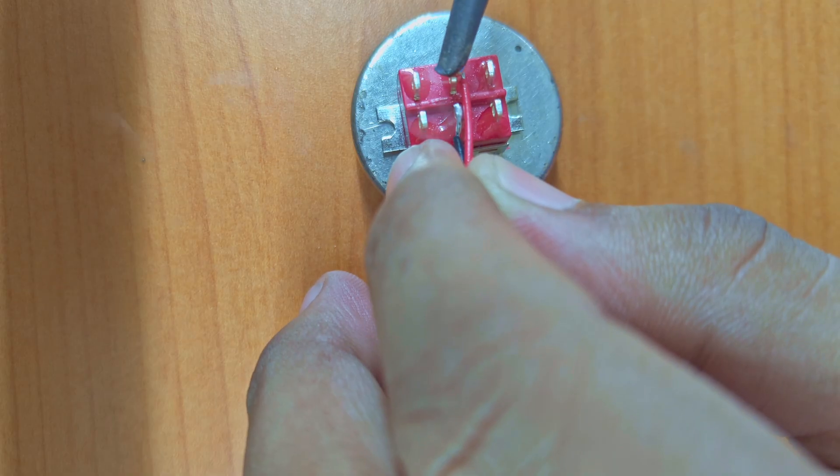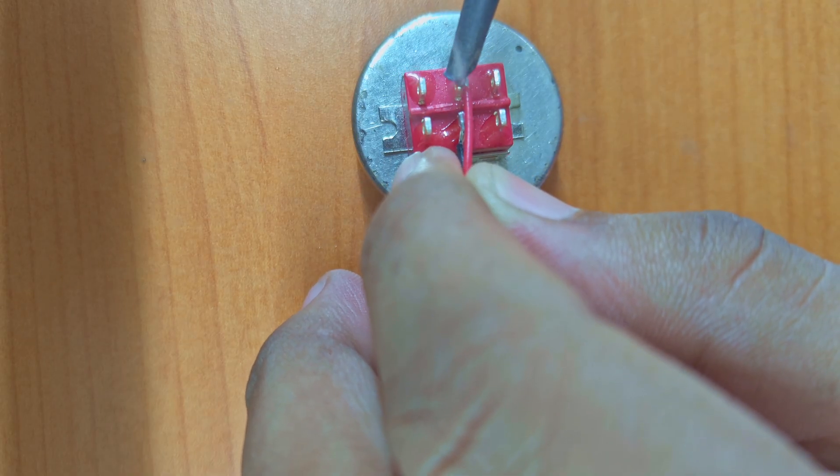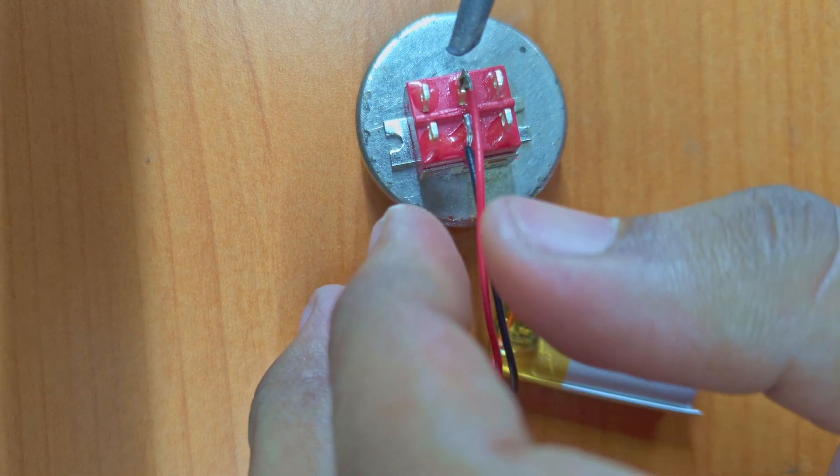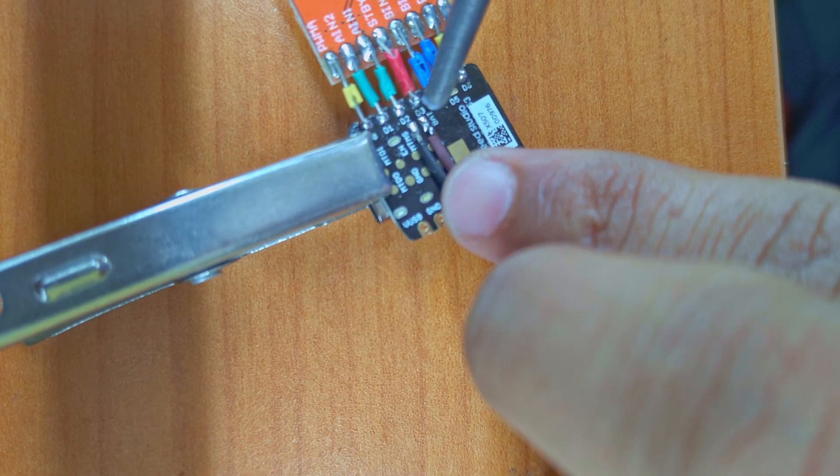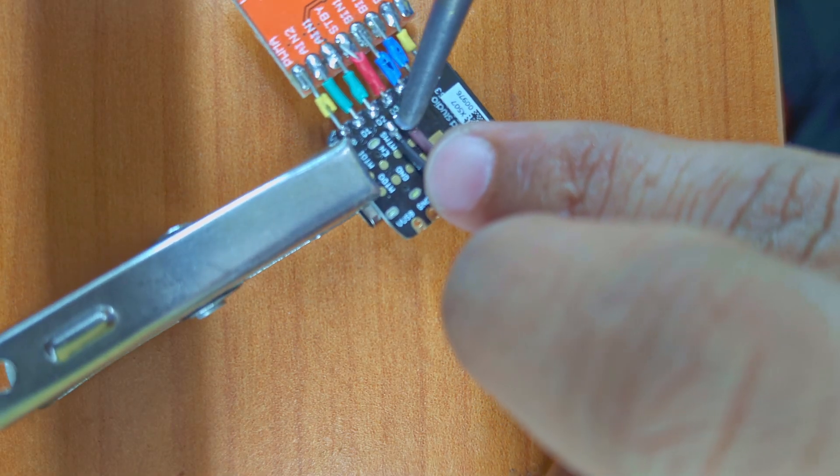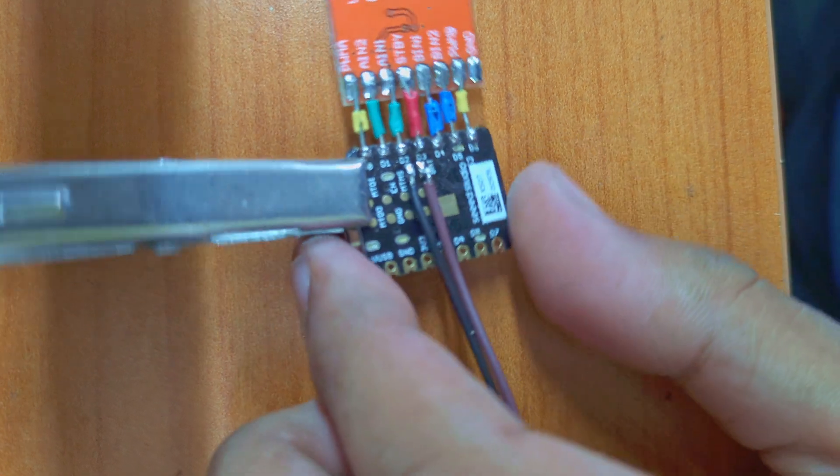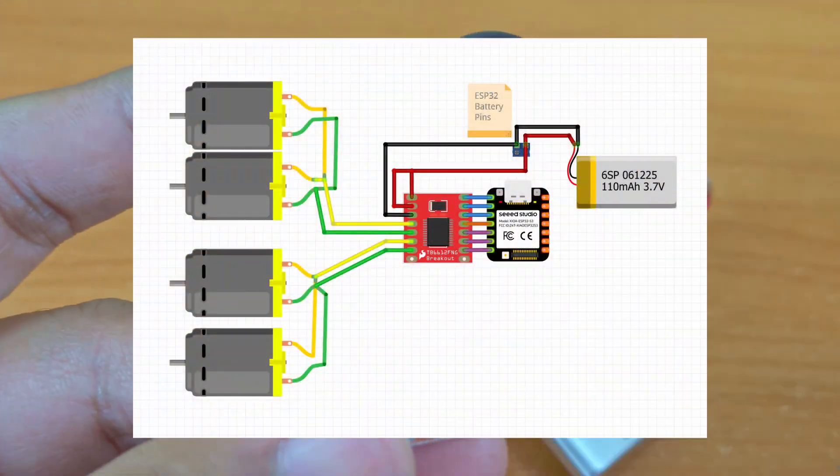Next, I am going to solder the battery to the board through a switch, so that we can turn it off when not needed. The connection diagram is linked in the description.